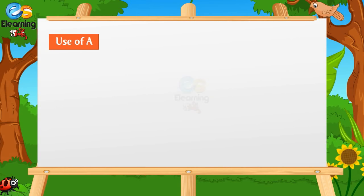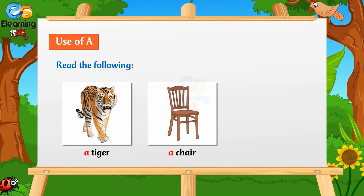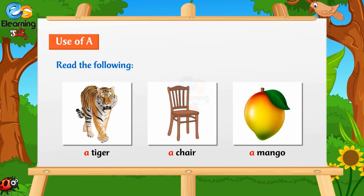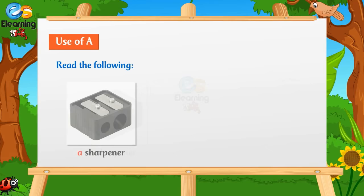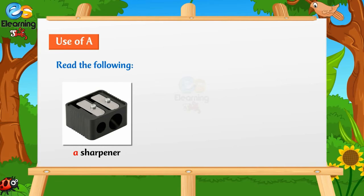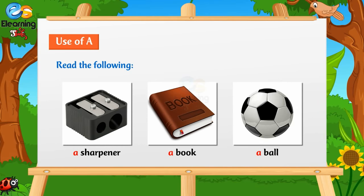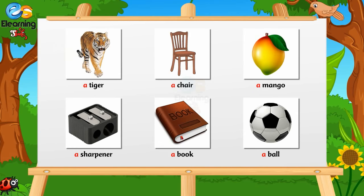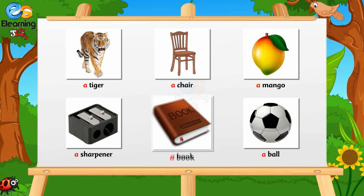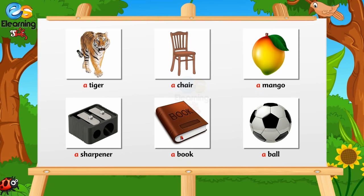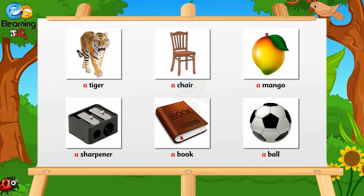Use of A. Read the following: A tiger, A chair, A mango, A sharpener, A book, A ball. The words tiger, chair, mango, sharpener, book, and ball are all names of things. These are in singular number and begin with a consonant sound. We have used A before all of them.